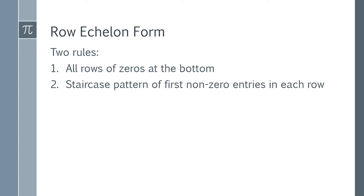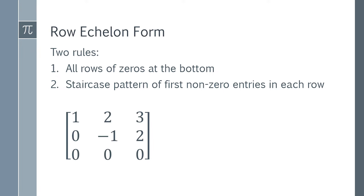The second rule is a little bit more complicated: you need a staircase pattern of the first non-zero entries in each row. Looking at this matrix on the left, which is in row echelon form, we find the first non-zero entry in each row reading from left to right. Drawing arrows, you can see this looks like a staircase — the first non-zero in the second row has the non-zero in the row above up and to the left, forming a simple staircase.